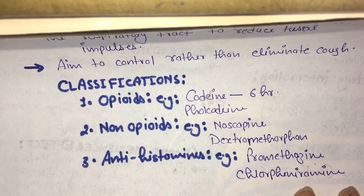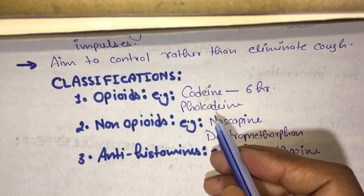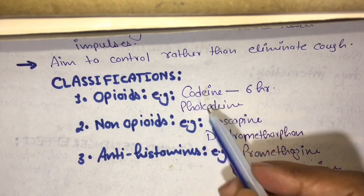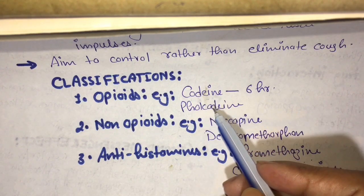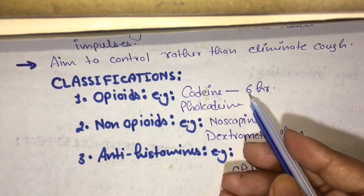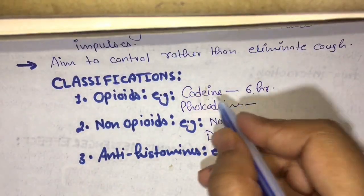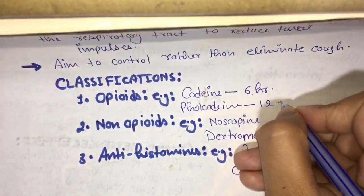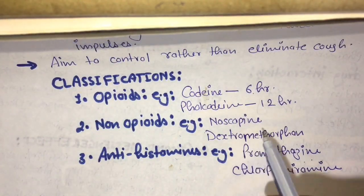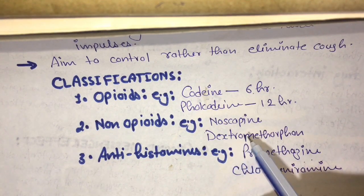The next drug is falcodeine, which is also an opioid drug. It is similar to codeine but has a longer duration of action — it suppresses the cough for 12 hours. The next drug is noscopine, which is also an opium alkaloid and belongs to the benzoisoquinoline series.